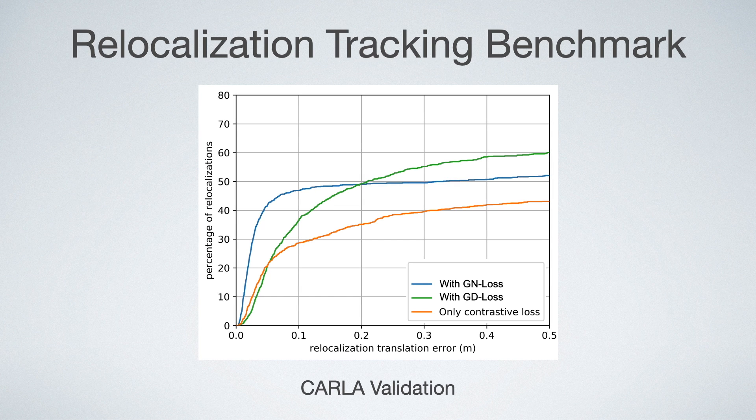When instead adding the Gauss-Newton loss, we see that the accuracy is improved, but the robustness not as much. Only when adding all loss terms together, we see a large improvement in both robustness and accuracy which confirms our derivations.